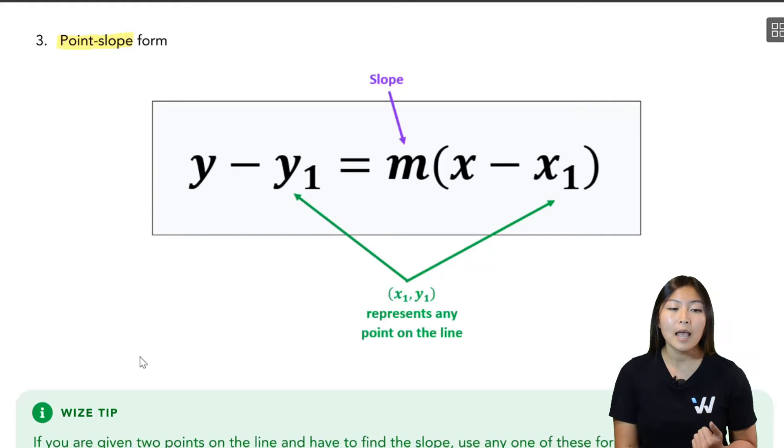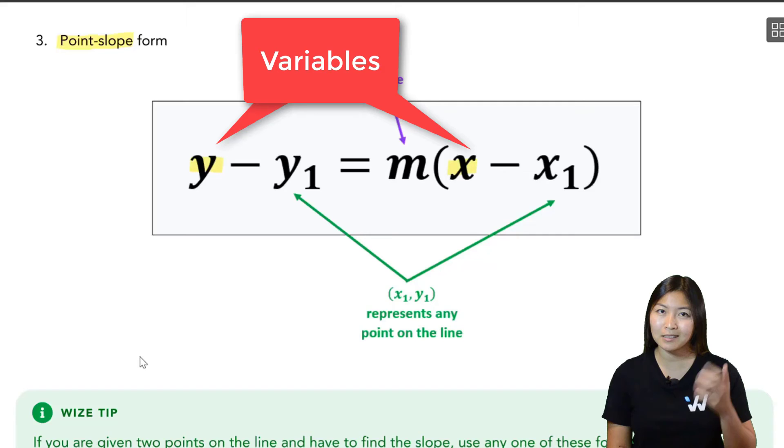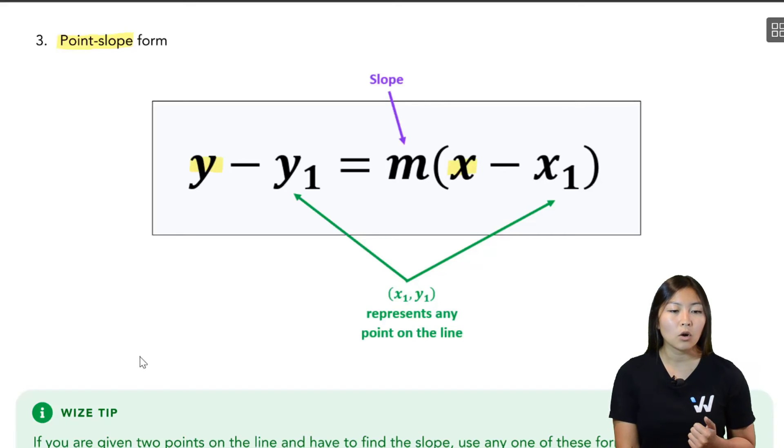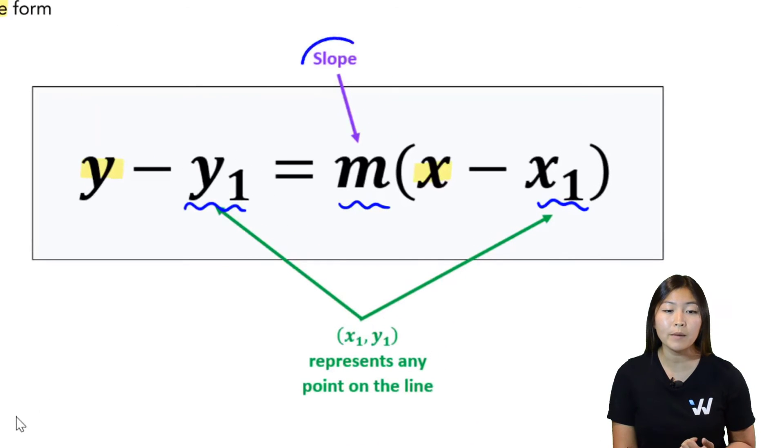In this equation, y and x are the variables. They stay as letters, whereas y1, m, and x1, these are numbers. Just like with your slope y-intercept form, m is the slope. It tells you how steep the line is.